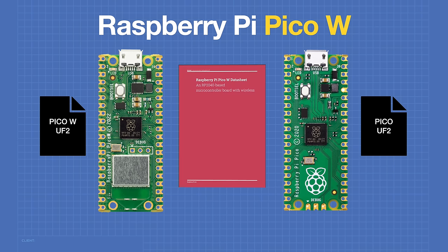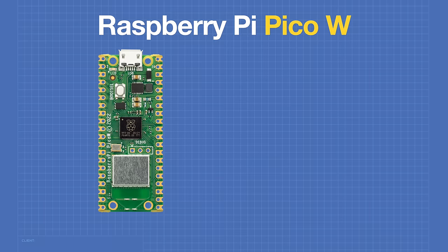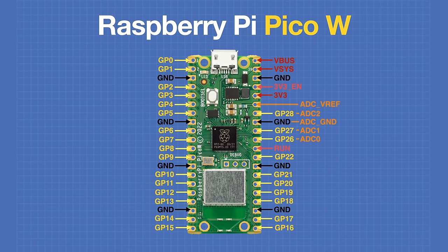When they released the Pico-W, Raspberry Pi also released the Pico-W datasheet with all the details about its connections and capabilities. The Pico-W has the same pinout as the original Raspberry Pi Pico, so all the development accessories you already have for the Pico will work fine with the Pico-W — it's a plug-in replacement for its predecessor.